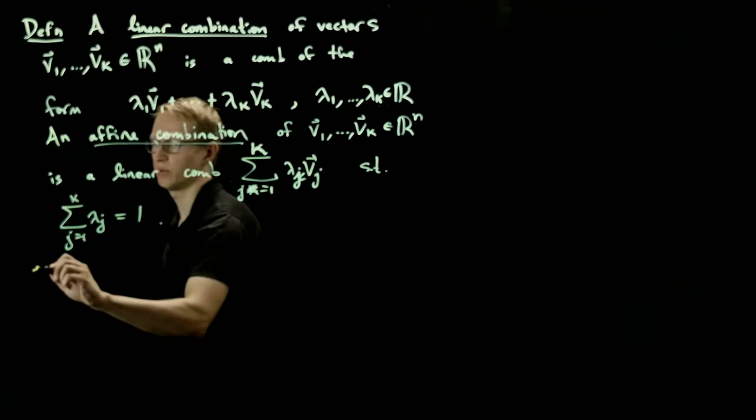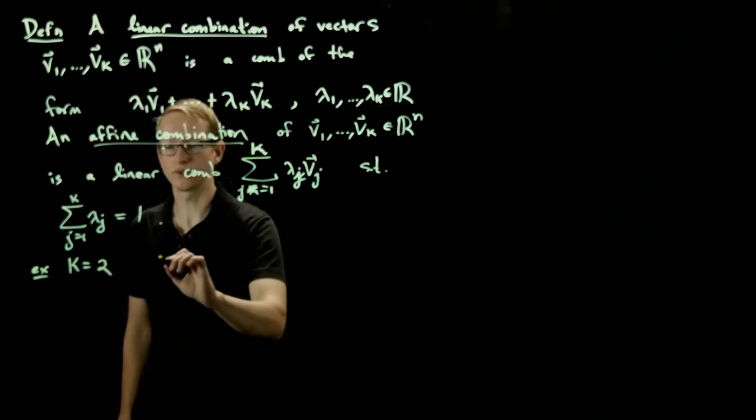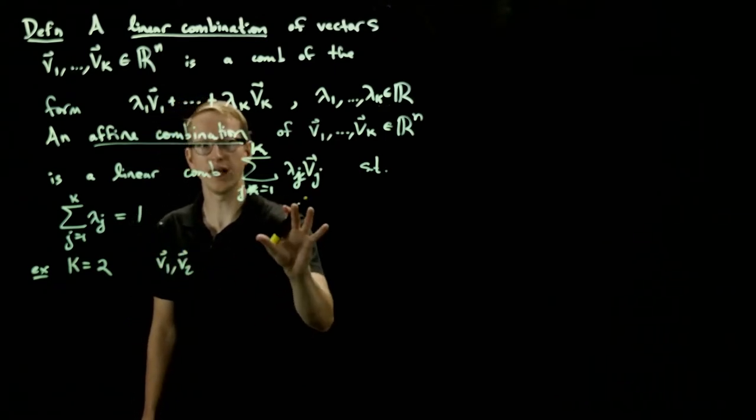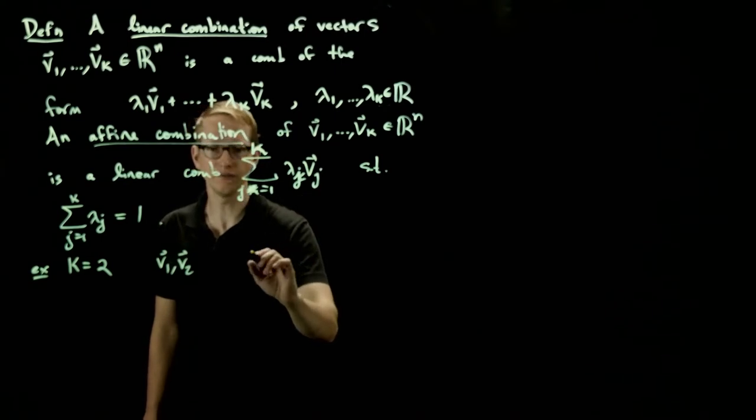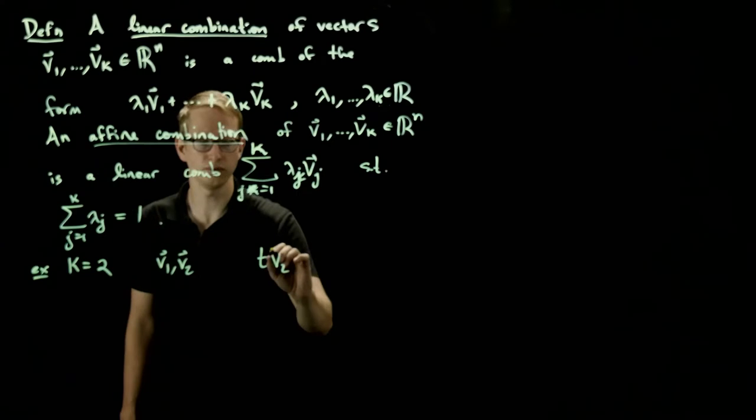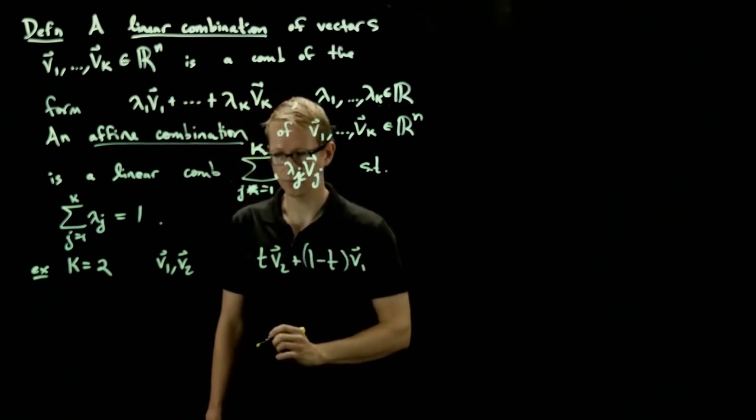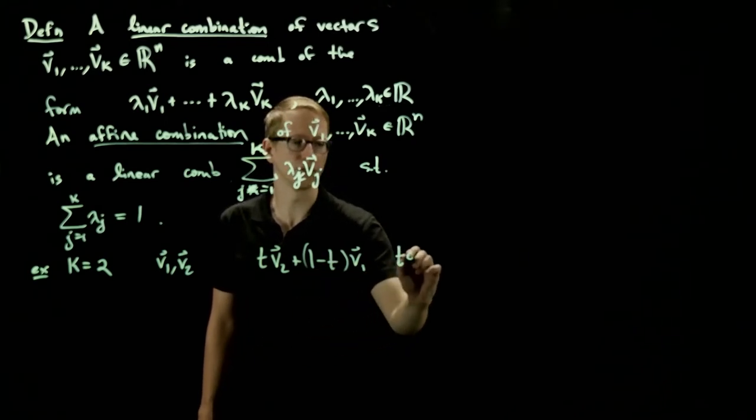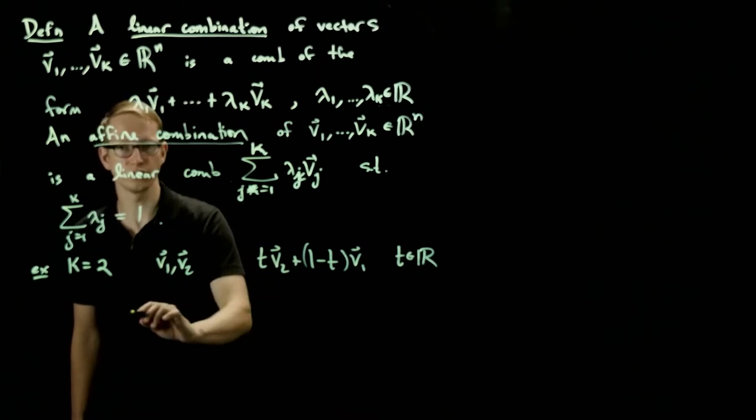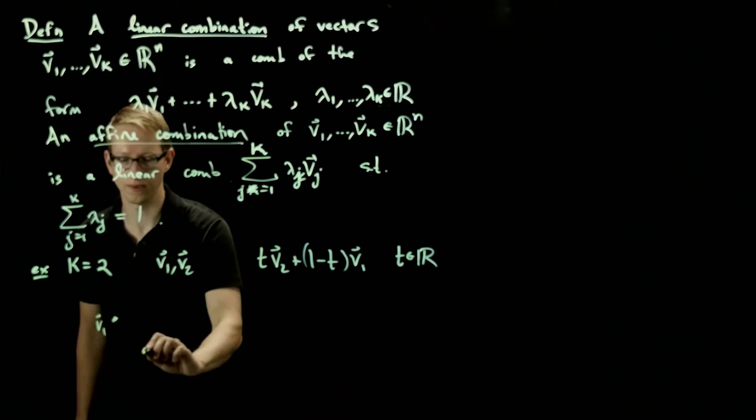So for example, when k equals 2, we have two vectors, let's say v1 and v2, then every such affine combination is of the form t v2 plus 1 minus t v1, where t is a real number. And you can look at what this says. Let's say these two vectors are different. Let's say v1 is here, and v2 is here.